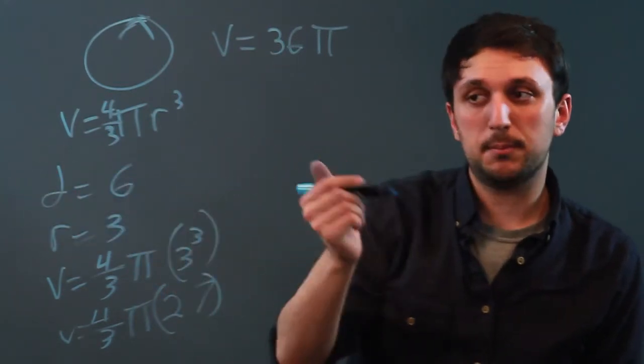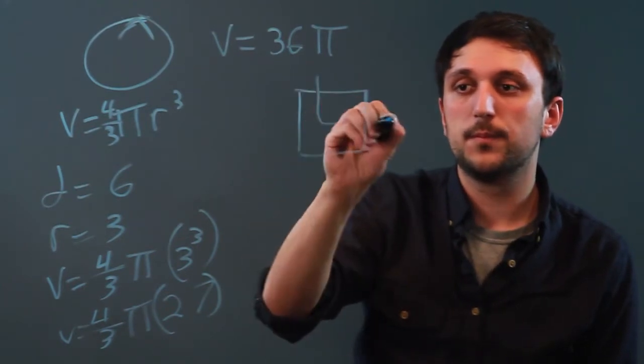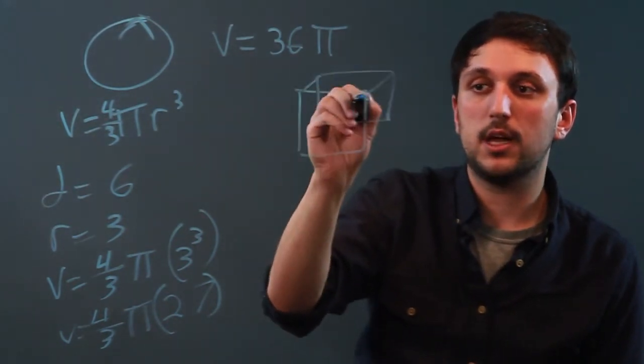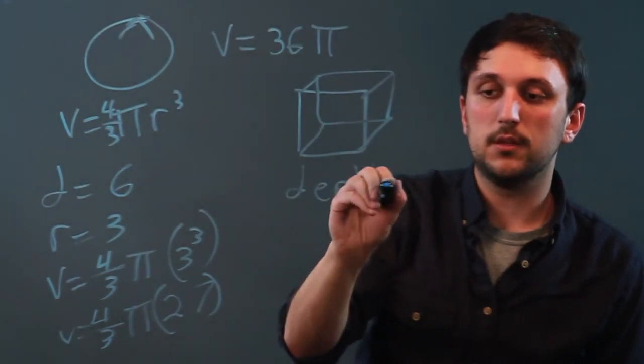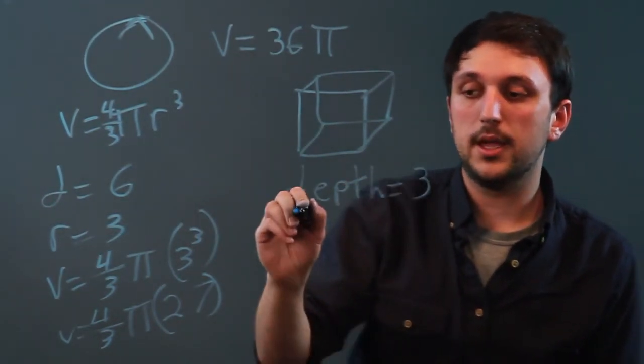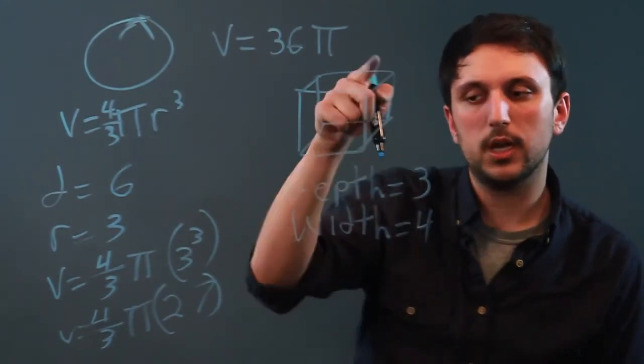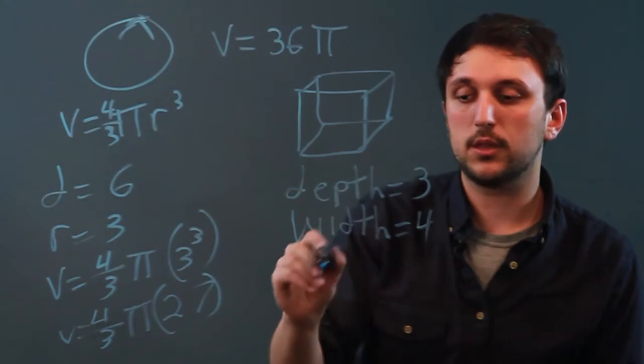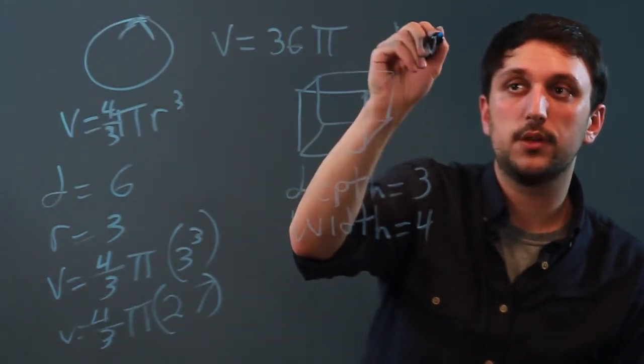Now if you say you had the depth, which is kind of like the diameter, but for a cube or a rectangular solid, let's say our depth is 3 and our width is 4. Well we would still need a height because the volume of a rectangular solid is depth times width times height.